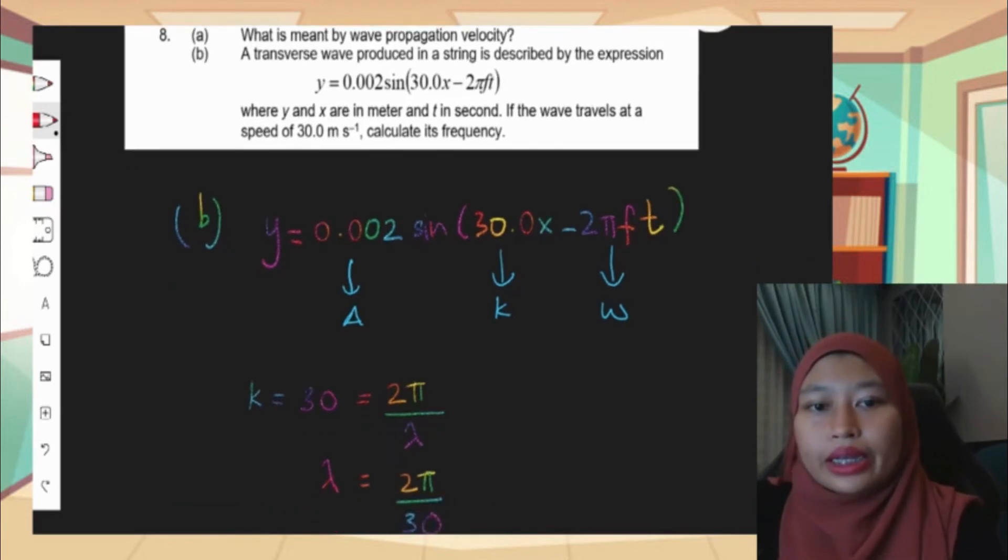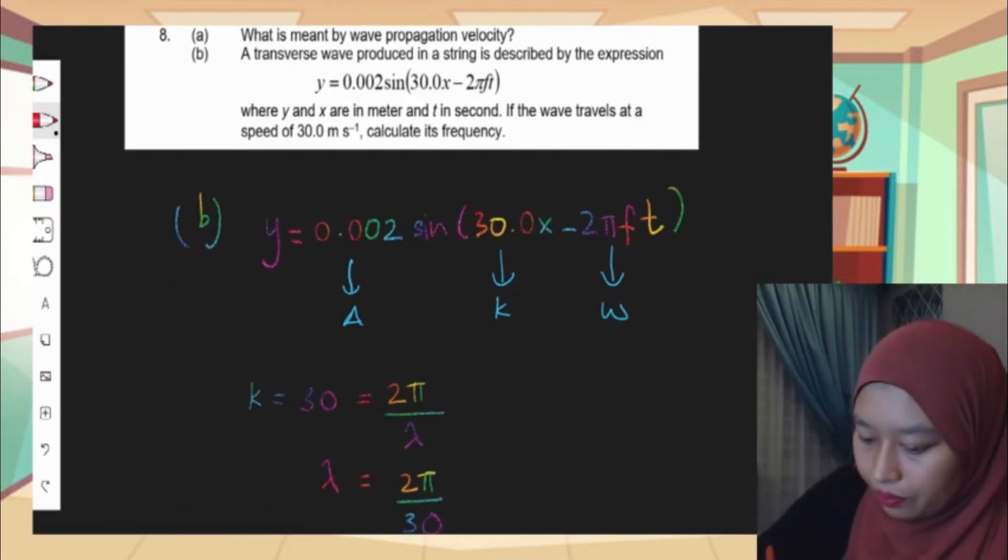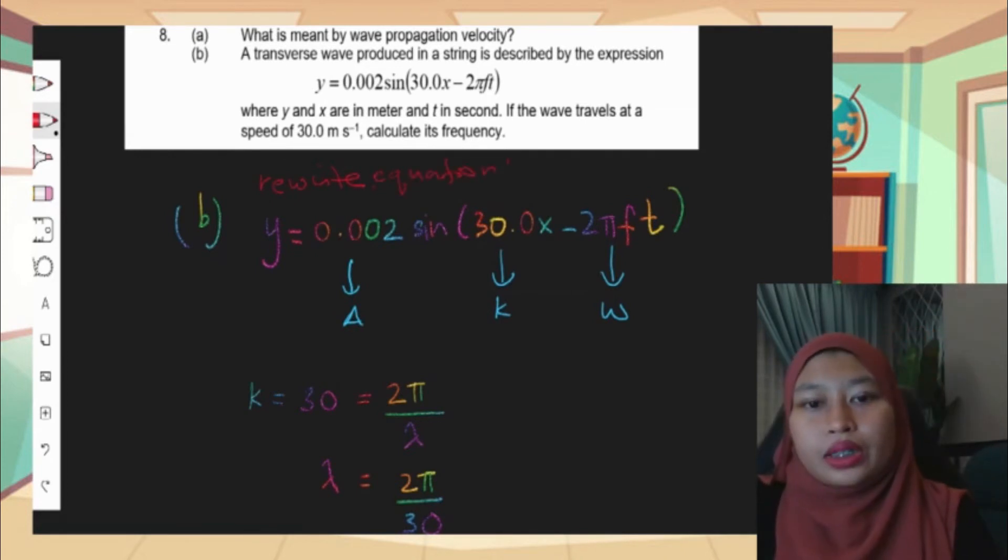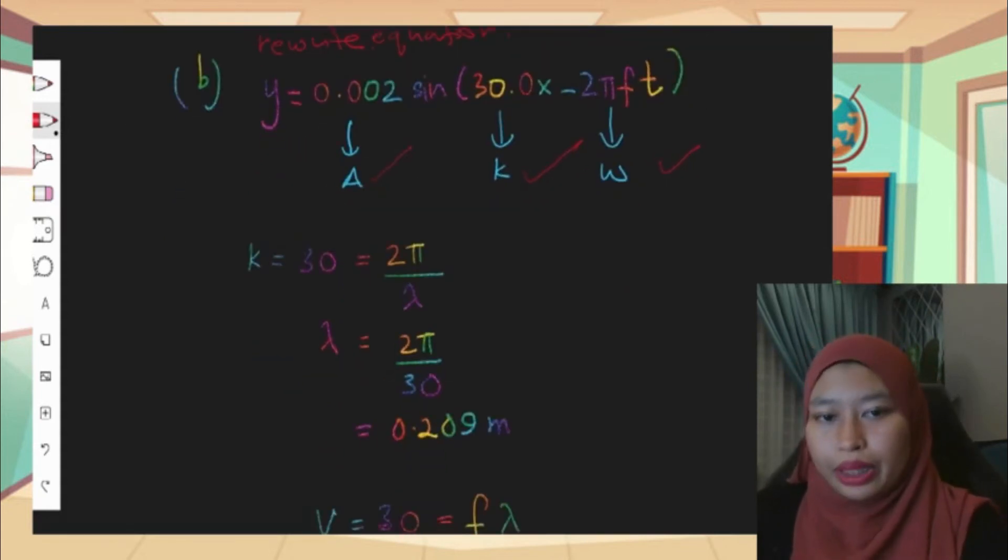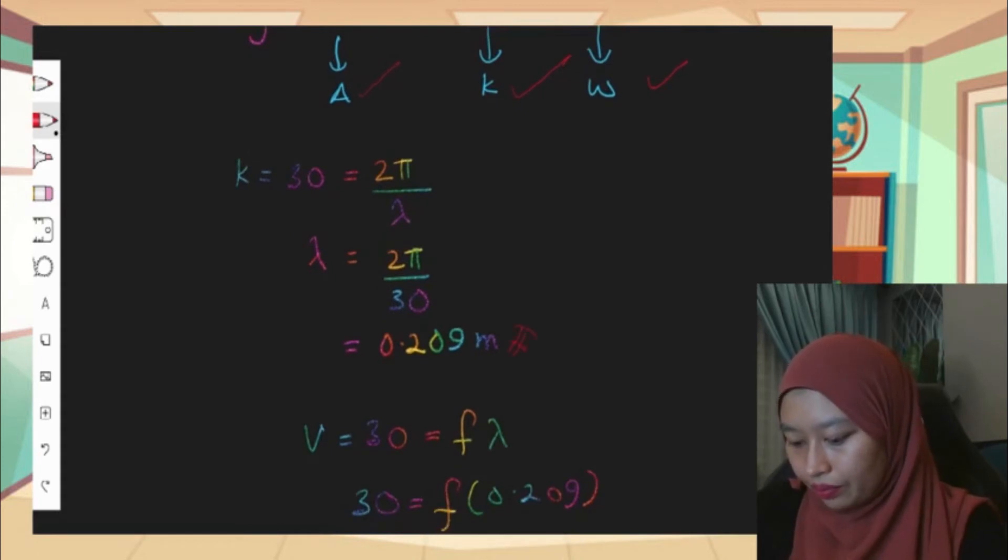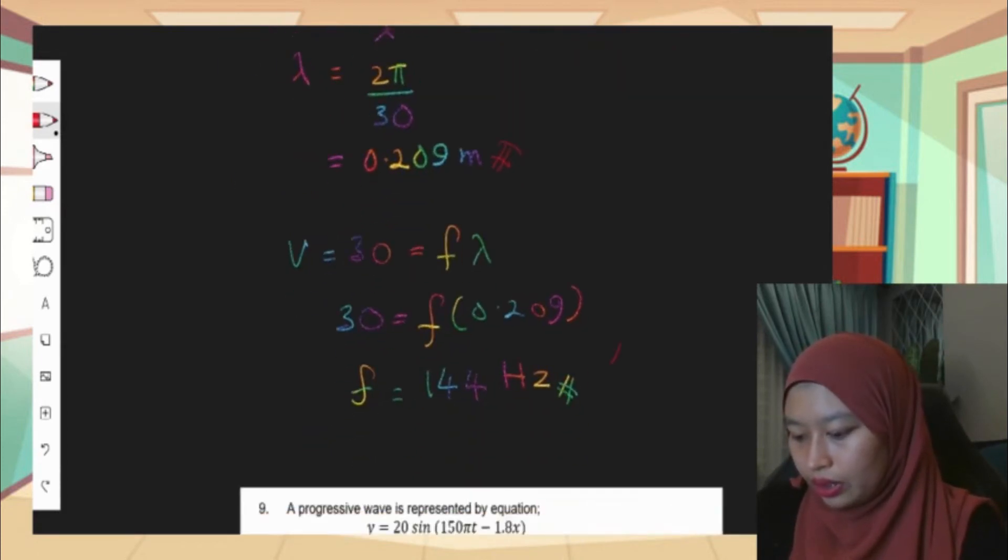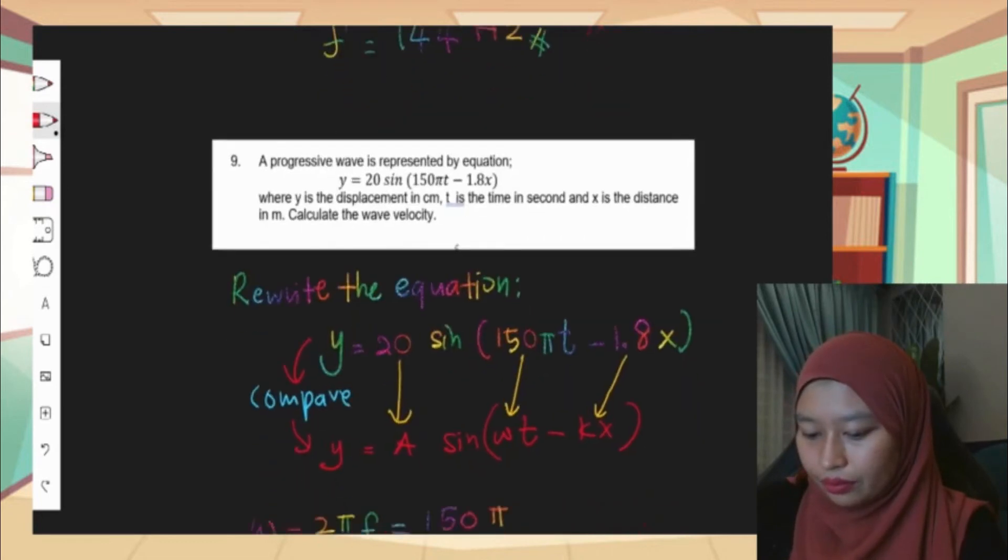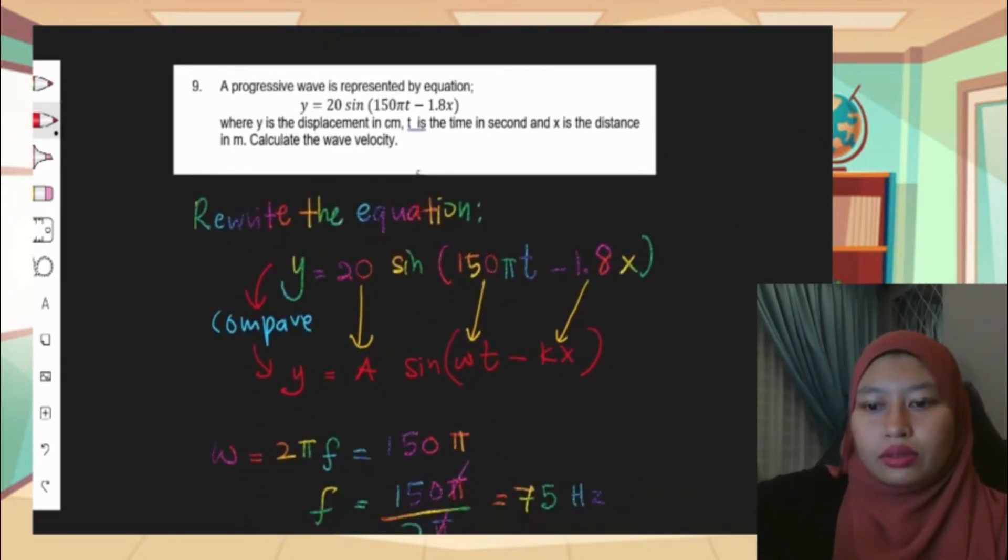So what I did here is I rewrite again the equation given. This is the step - rewrite equation. Compare with the general equation. So if we compare the general equation, we can find the value of A, the value of k, and the value of omega directly. From that comparison method, we can find lambda, we can find the frequency as the question asks.